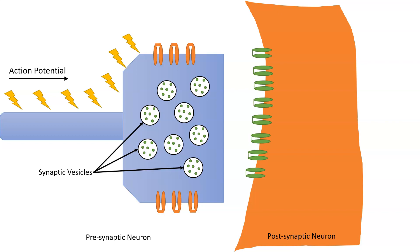In order for these synaptic vesicles to be released, they require a signal to cause them to fuse with the membrane and release their contents into the synaptic cleft — the space in between the synaptic terminal and the dendrite of the other neuron.